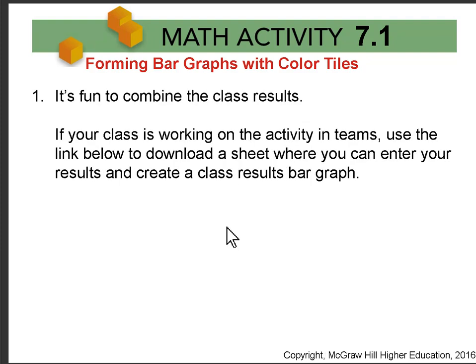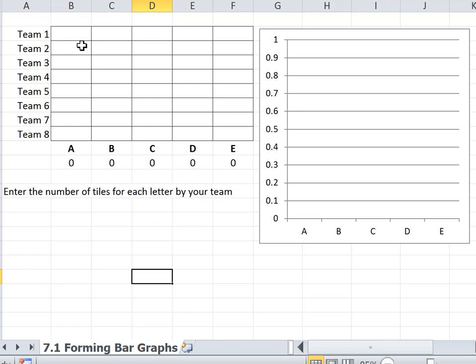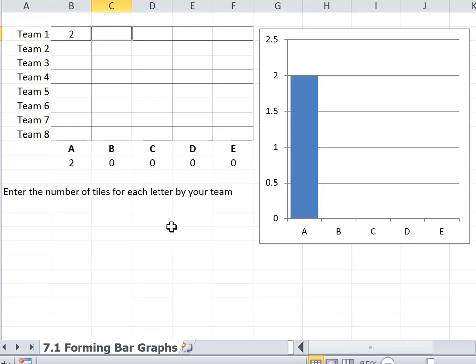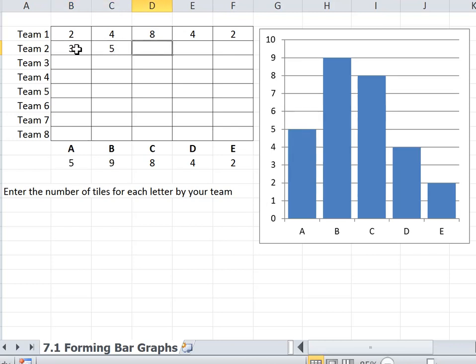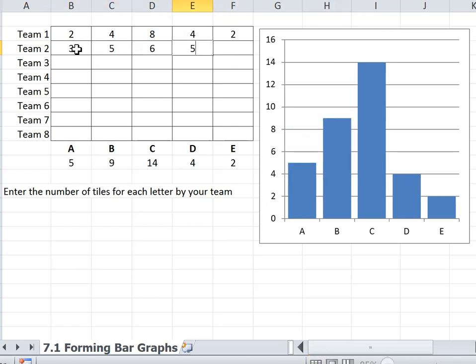It's really fun to combine class results when you do this. Once everybody has spun and moved 32 tiles into a bar graph, there's a link to this sheet below the video. And for example, if team four spun these numbers, which you remember you're going to have yours add up to 32, it would make a bar graph. And if I added for team three, I'd get a different bar graph.